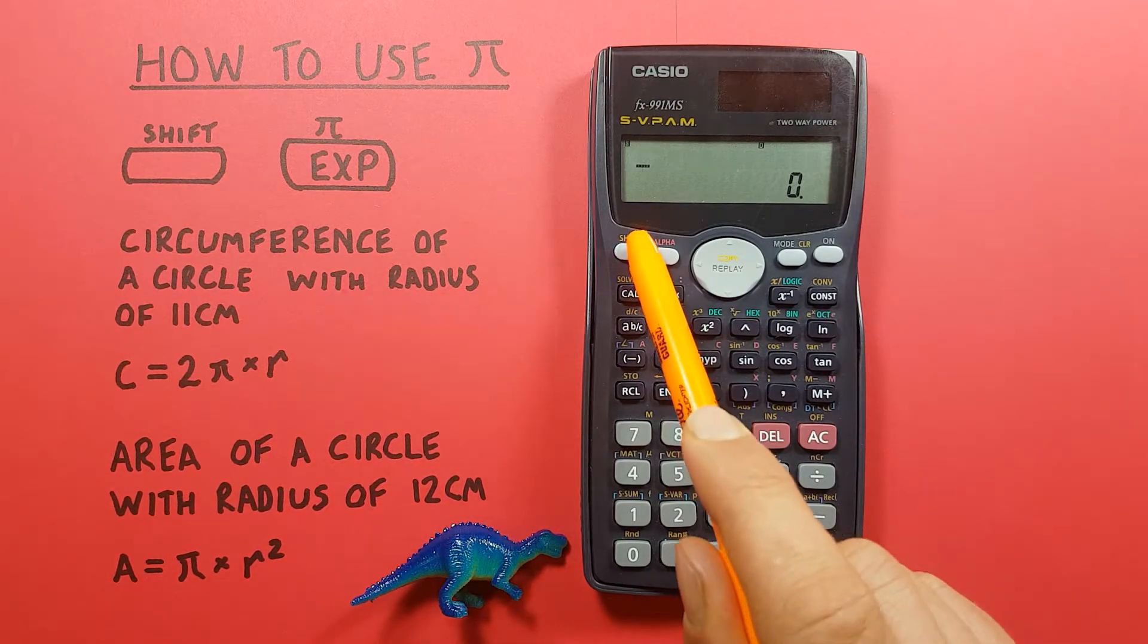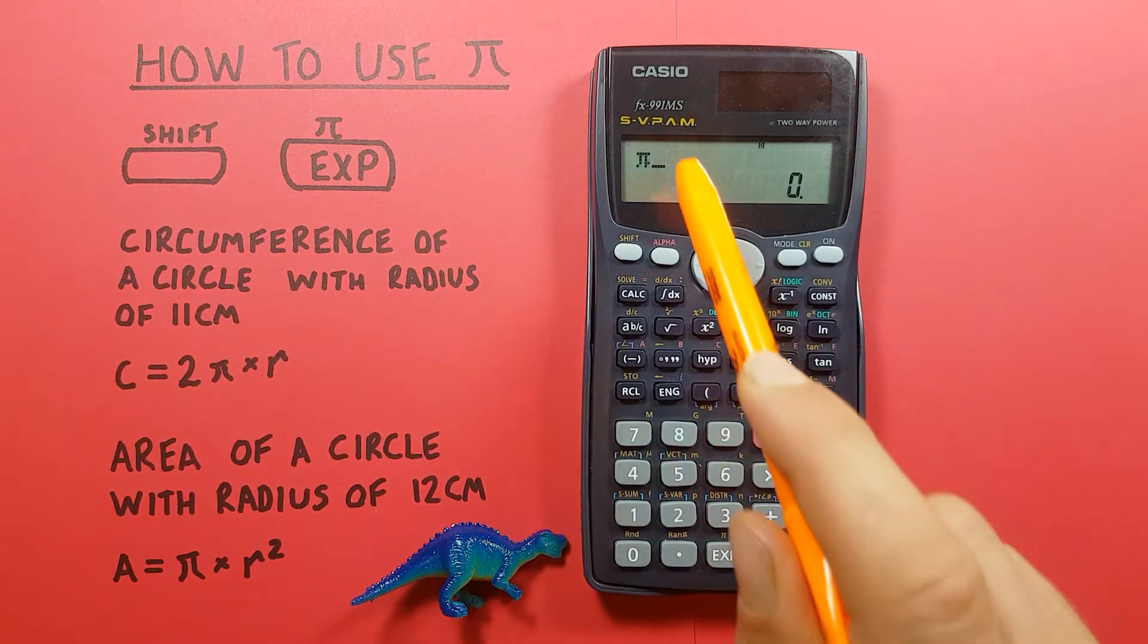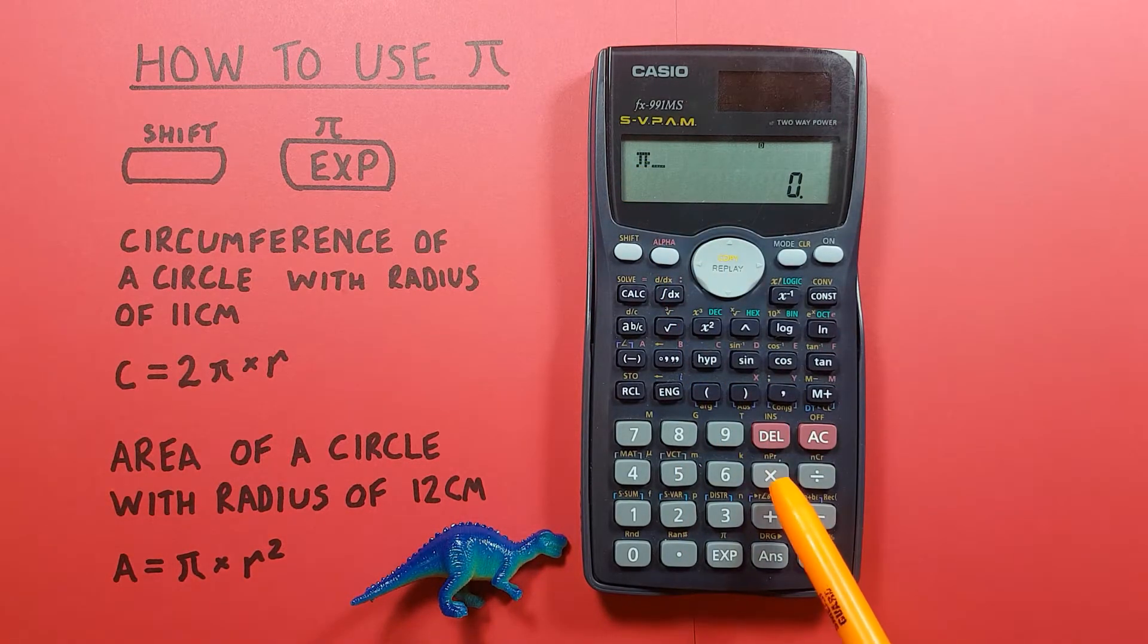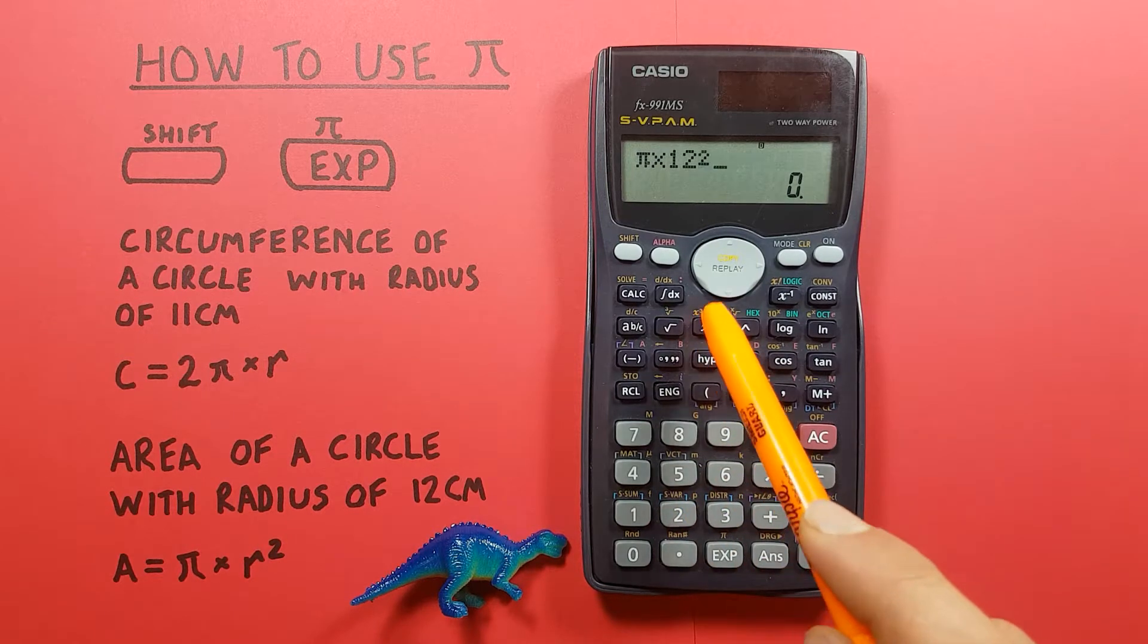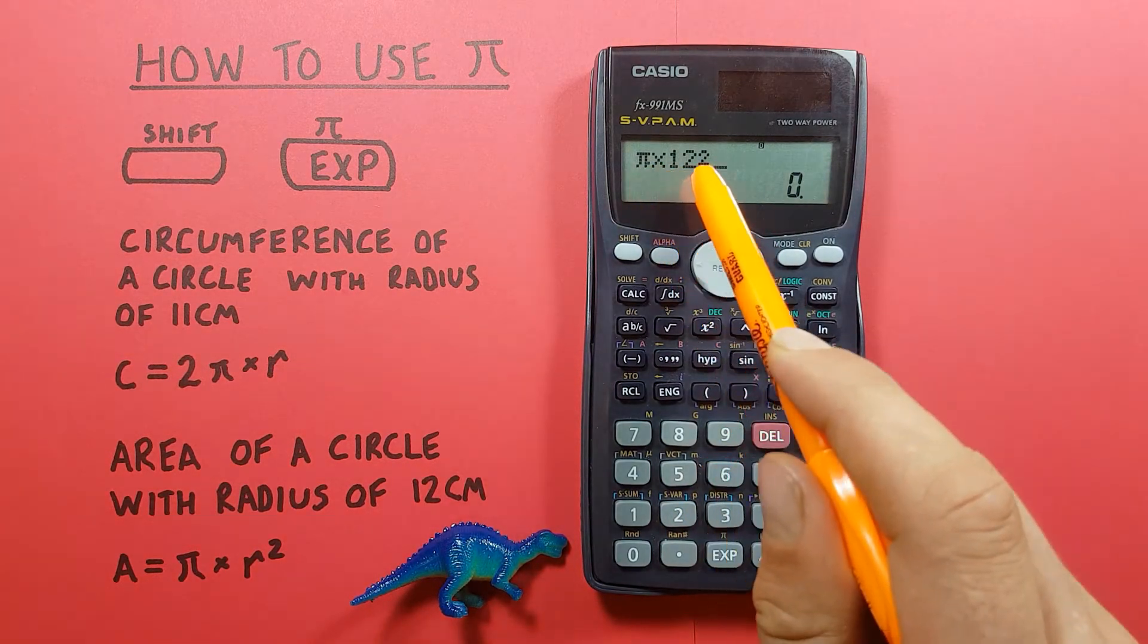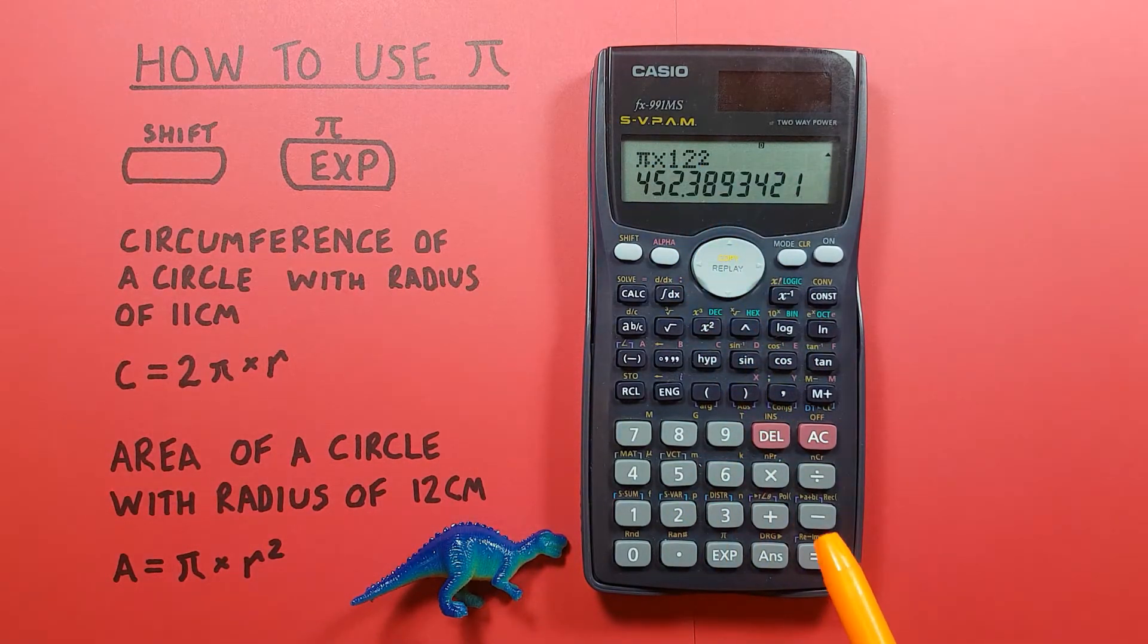So shift exp for our PI, there we go, times our R which was 12, square it, there you go, PI times R squared equals and you can see we get an area of 452.3893 etc.